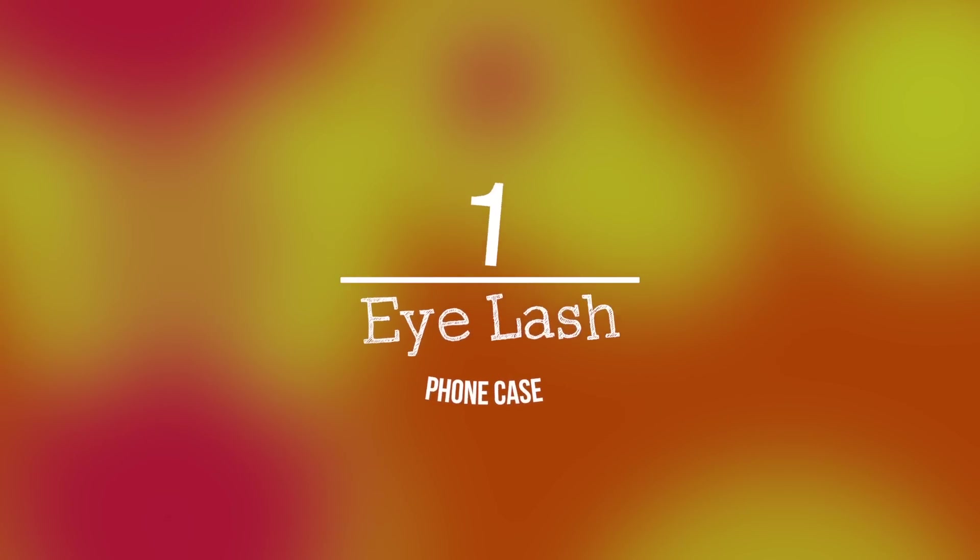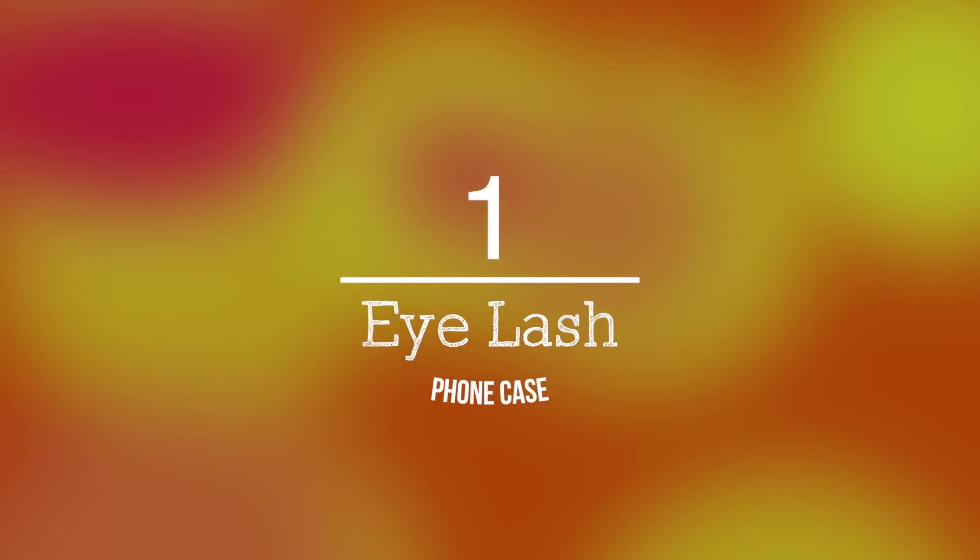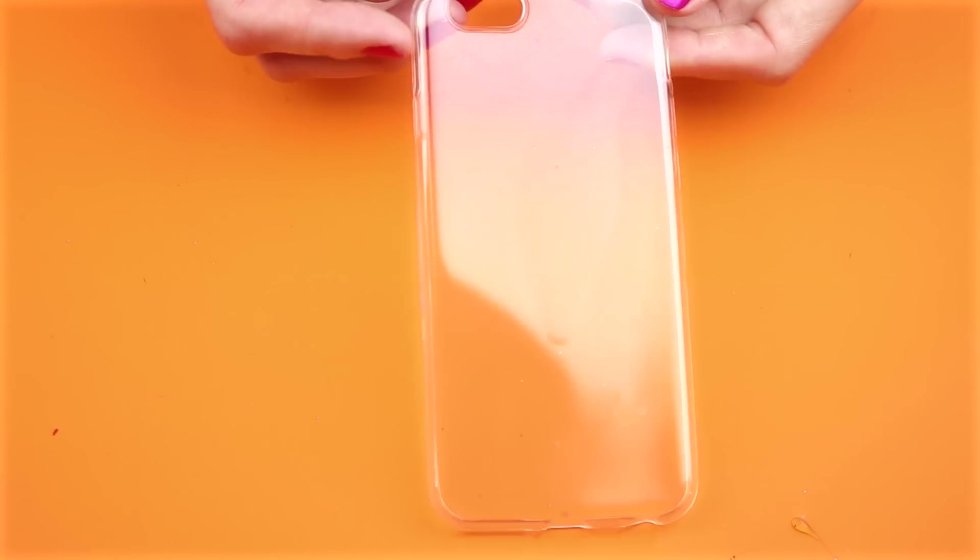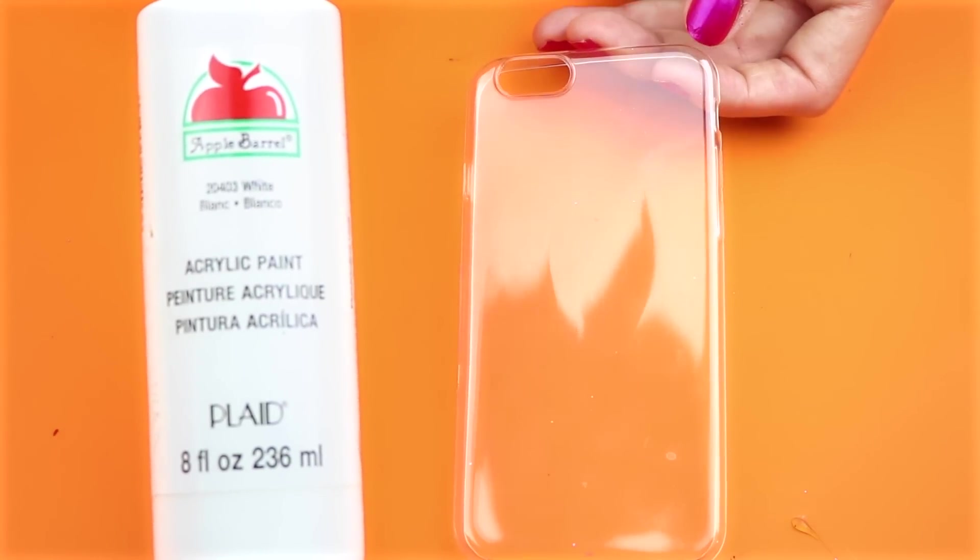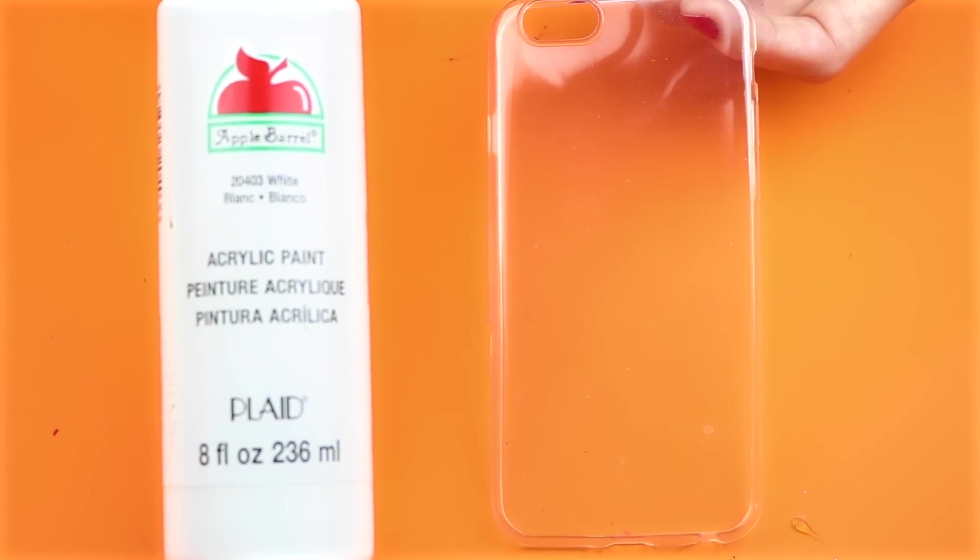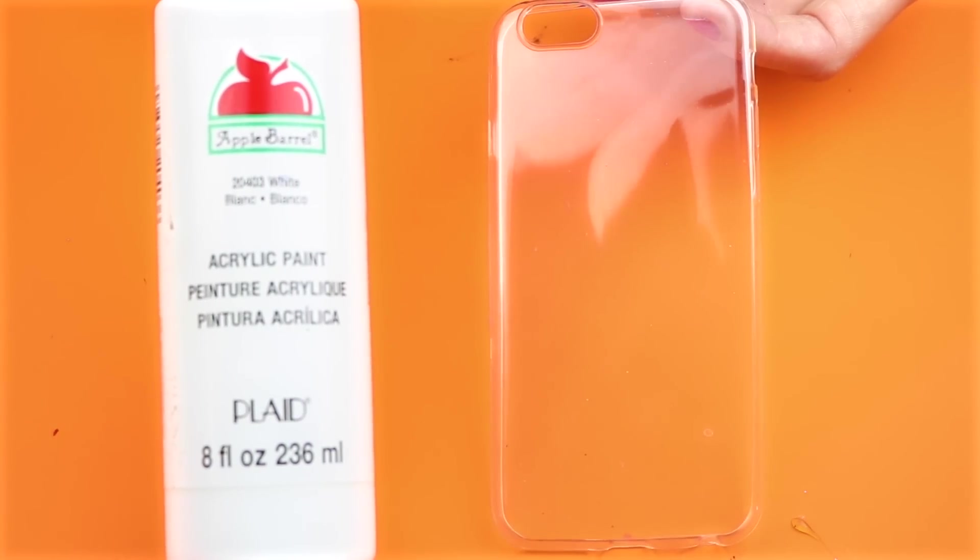The first phone case I will show you will be a DIY eyelash phone case. For this one, you will need some sort of case for your phone and also some white paint. You will just want to start by painting the phone case white.